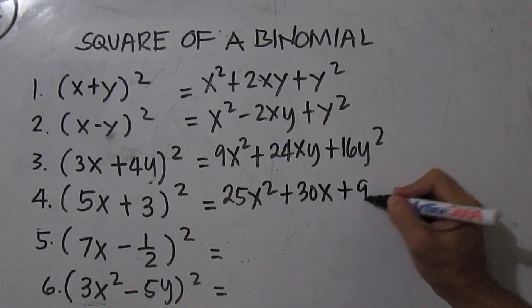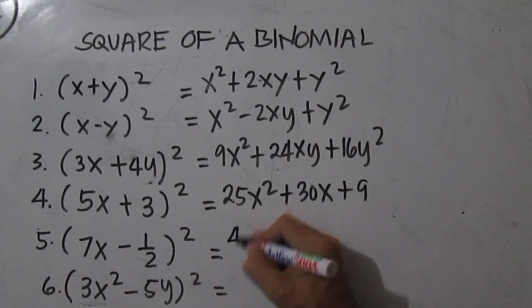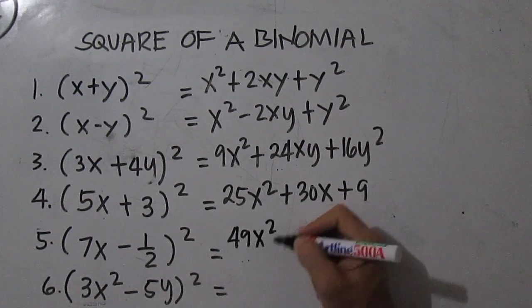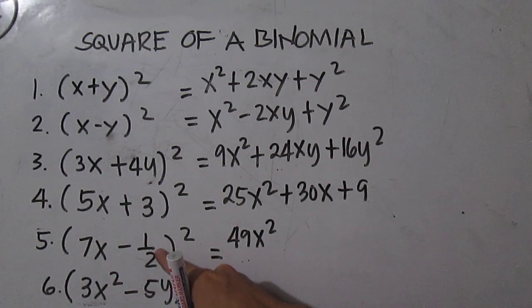Number 5: 7x times 7x is 49x squared, then 7x times negative 1 half is negative 7x over 2.